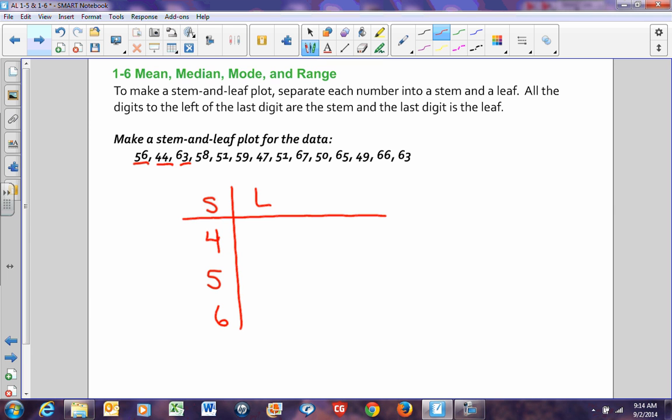I'm going to highlight for a second all of my numbers in the 40s. I have 44, I have 47, I have 49. I have three numbers in the 40s. The smallest is 44, so I'm going to make that leaf be a 4, and then my next leaf is a 7, and my next leaf is a 9. Don't put commas between your leaves. You just leave spaces.